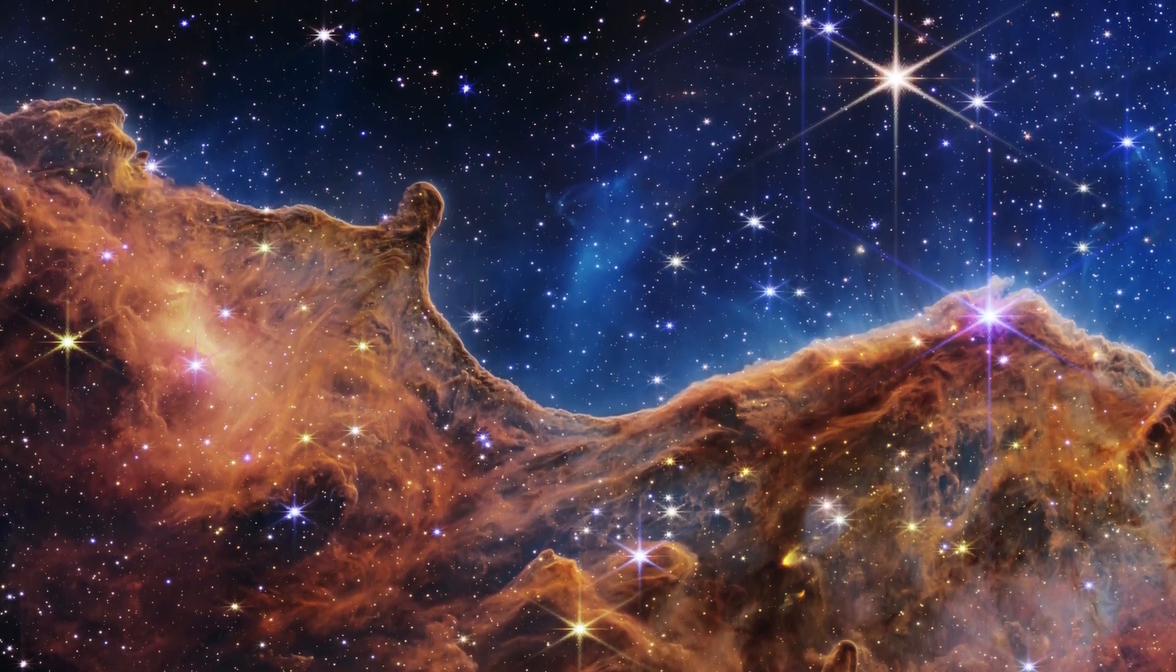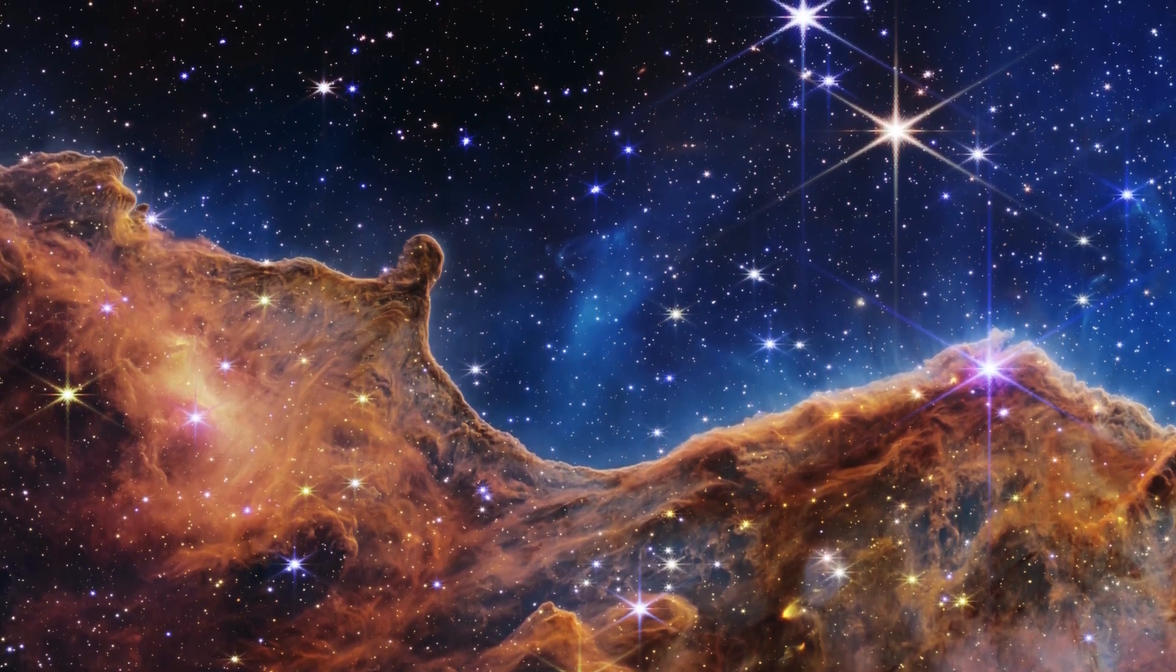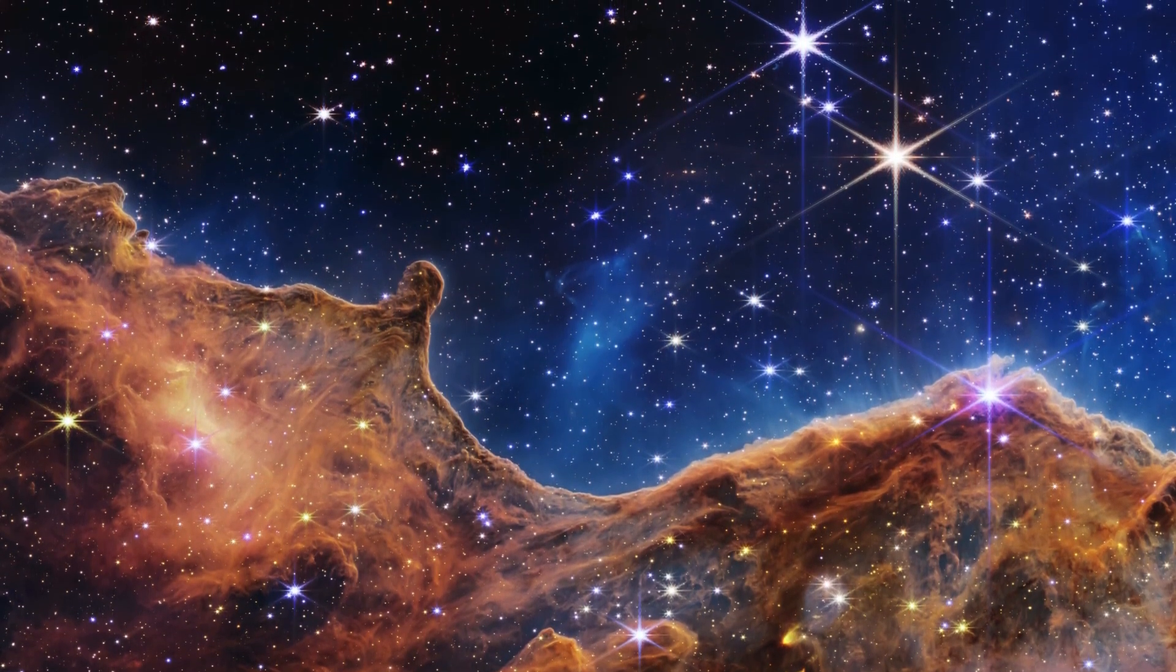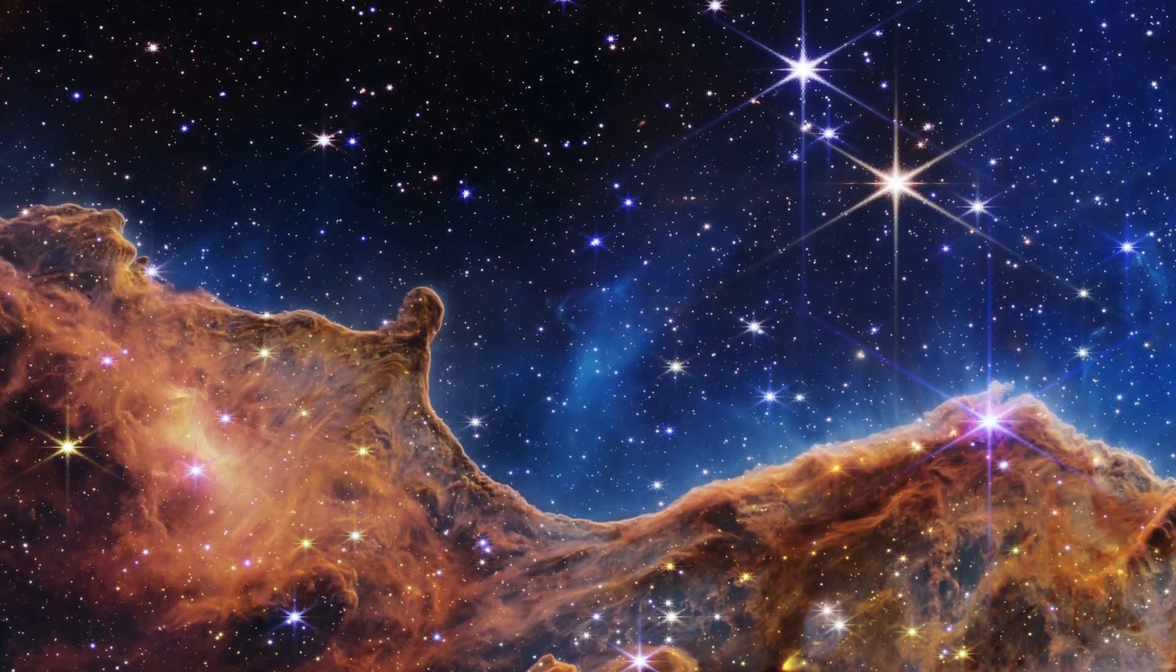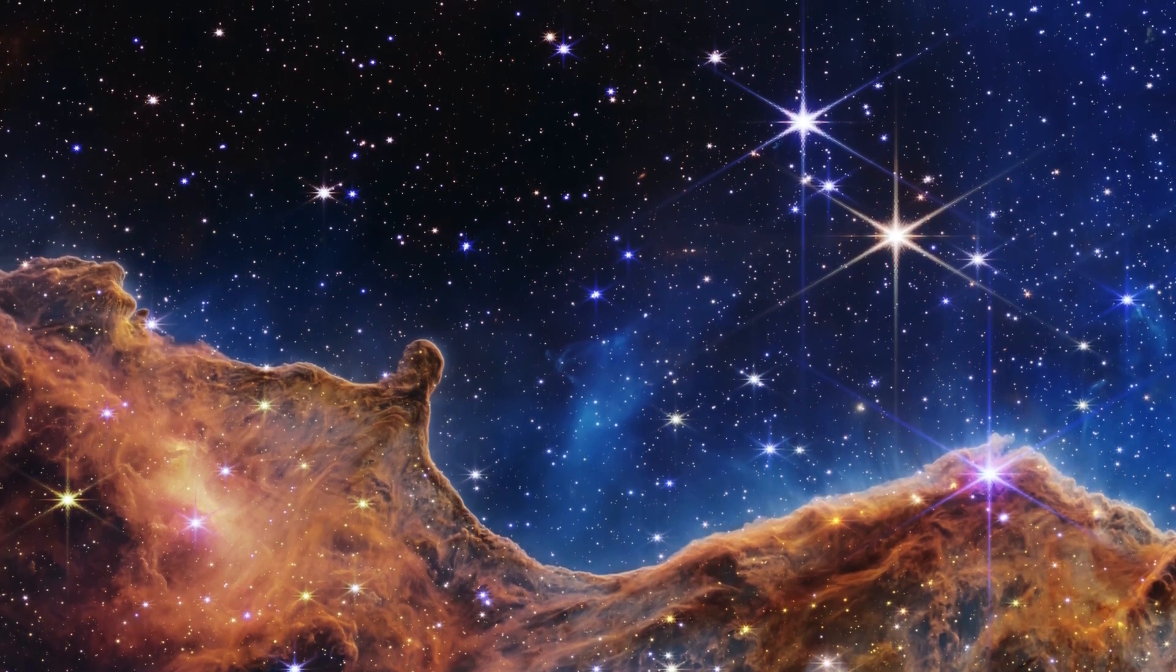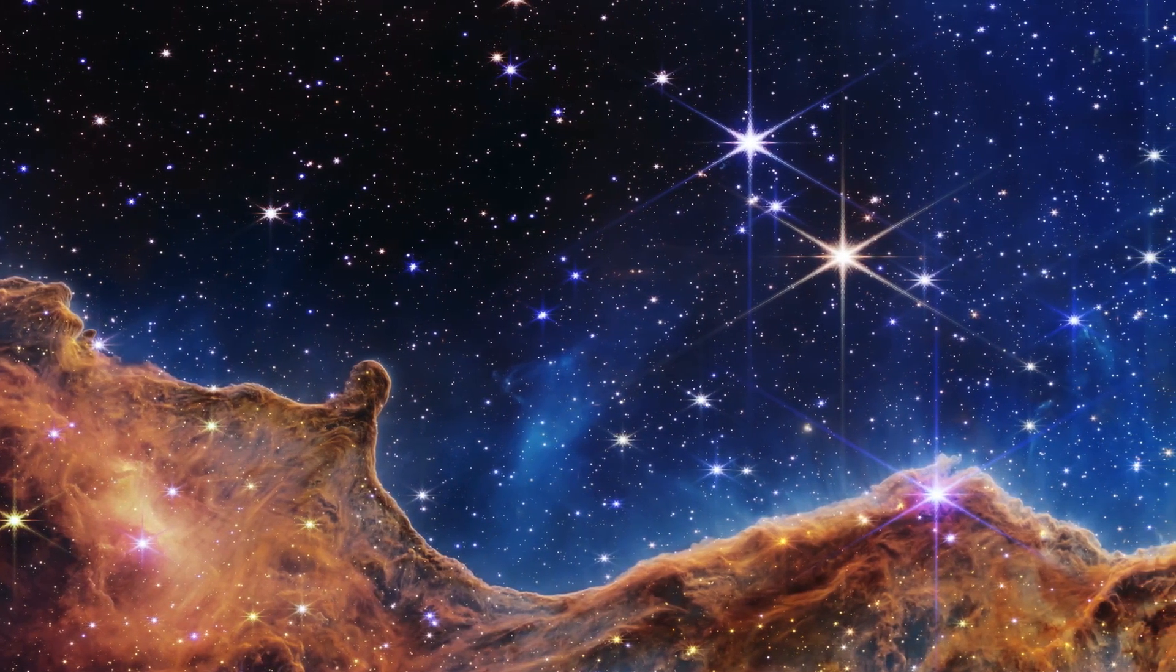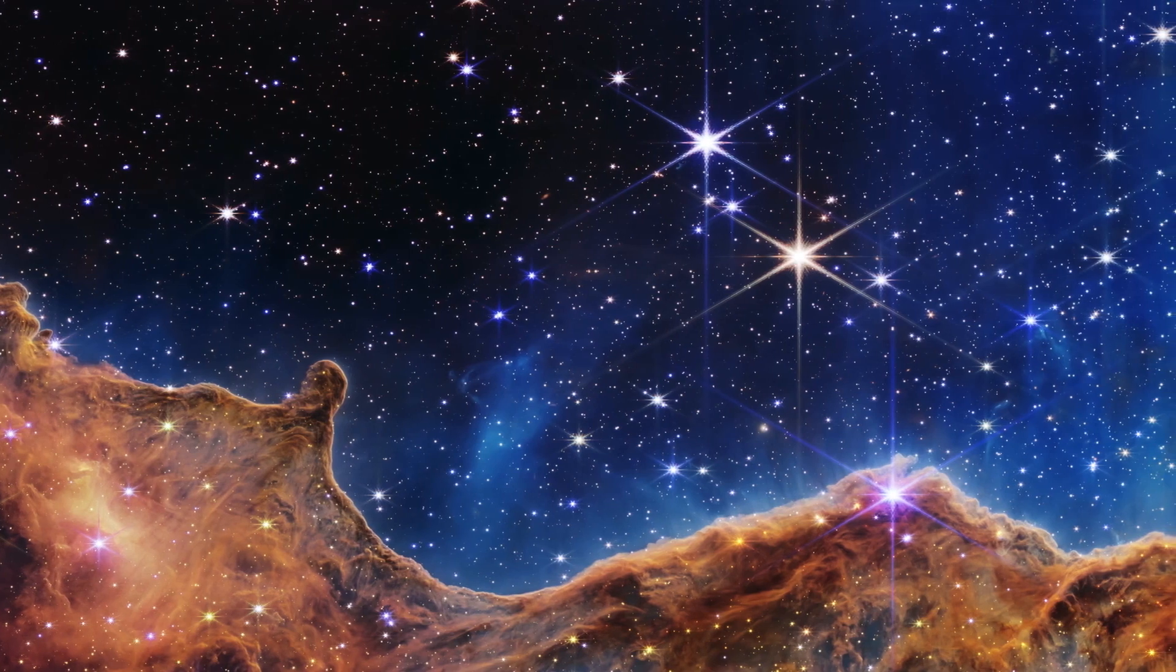The cavernous area has been carved from the nebula by the intense ultraviolet radiation and stellar winds from extremely massive, hot, young stars located in the center of the bubble above the area shown in this image. The blistering ultraviolet radiation from the young stars is sculpting the nebula's wall by slowly eroding it away.